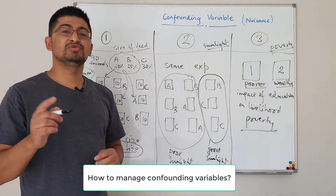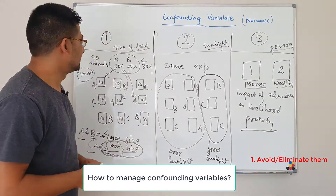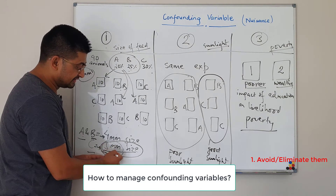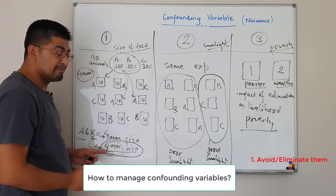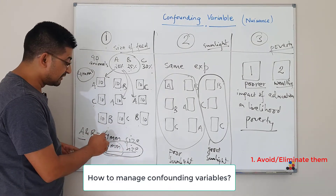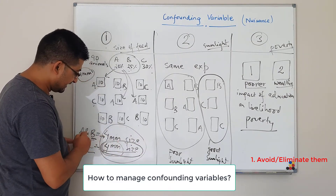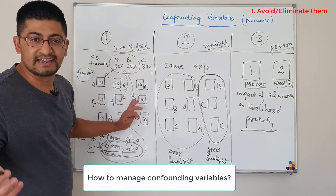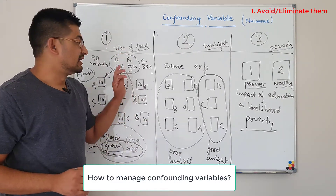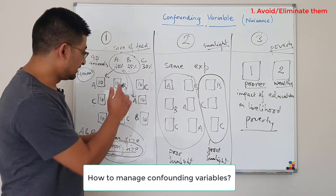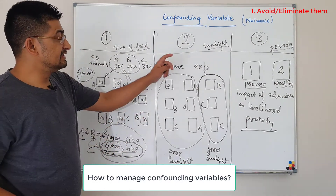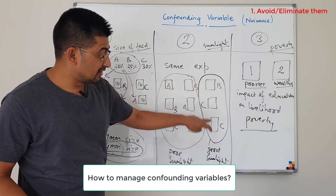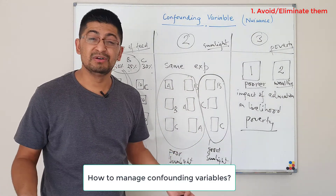The first way to manage confounding variables is to avoid or eliminate them. In example one, if you are a little more careful, you can easily avoid the mistake by using the same machine for all treatments — so 4mm feed size for A, 4mm for B, and 4mm for C. That means you easily avoided that error. However, in examples two and three, you may not be able to avoid those confounding variables so easily — for instance, there will always be differences in sunlight, and creating a new facility with identical sunlight might be very expensive.